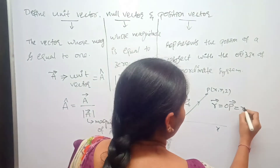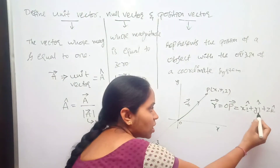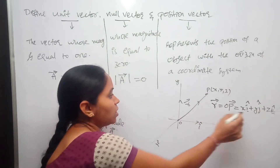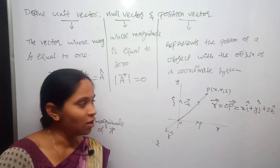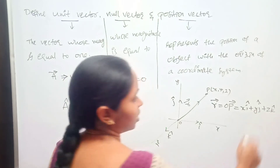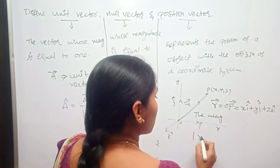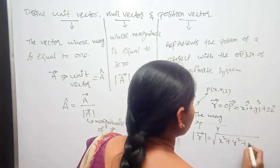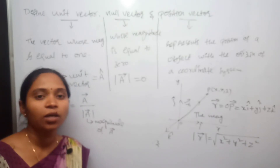R-bar, which is nothing but OP-bar, is given as x-i-cap plus y-j-cap plus z-k-cap, where i-cap, j-cap, and k-cap are the unit vectors along the x, y, and z axes respectively. The vector representation of position is r-bar equals x-i-cap plus y-j-cap plus z-k-cap, and the magnitude is given by mod R-bar equals the square root of x-squared plus y-squared plus z-squared.